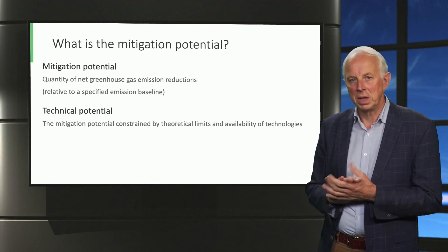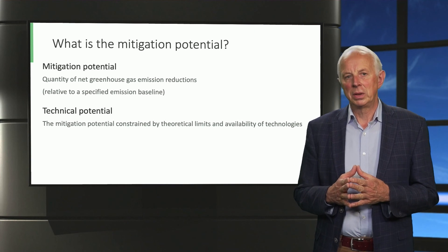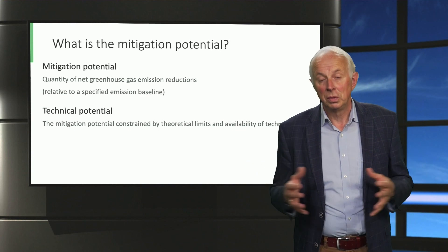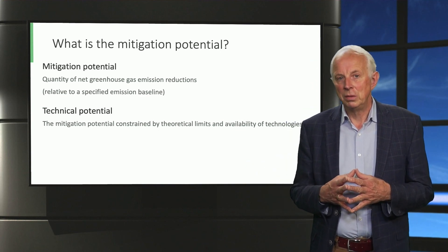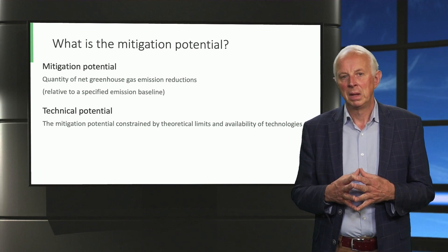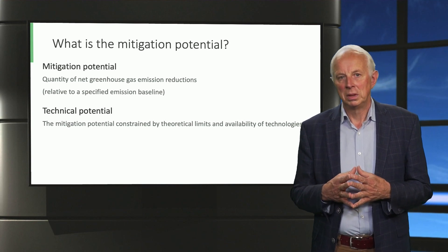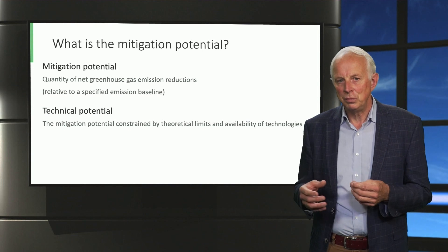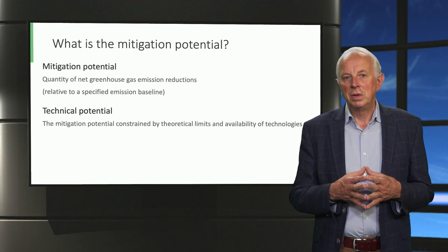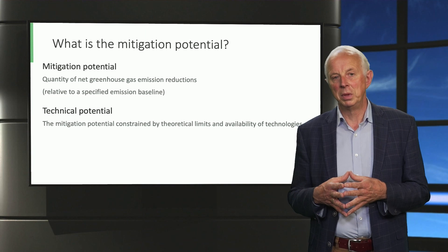We consider a technical potential which has two constraints. One is all kinds of theoretical limits — there are limits to the size of the land or the size of the earth, and thermodynamic limits to conversion efficiencies of all kinds of energy conversion equipment. It is also limited by what is technologically feasible at a given moment. At a given moment we have a maximum conversion efficiency, for example, of solar panels, or a maximum savings achievable with certain types of technology available at a certain moment in time.